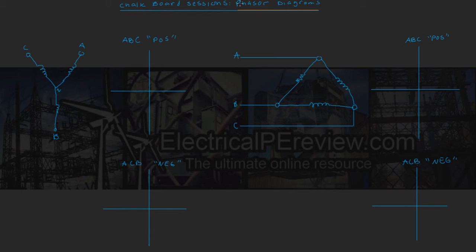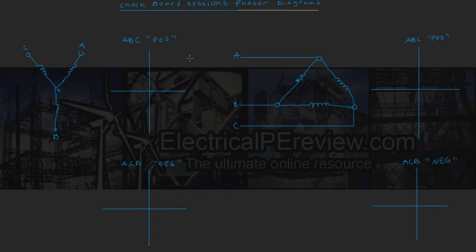So what exactly are phasor diagrams? We've got four empty phasor diagrams laid out here that we're about to populate. We've got a delta source and a Y source. A phasor diagram, in essence, is your polar graph of either currents, voltages, impedance, or power — just graphed in the polar domain. Usually when we talk about phasor diagrams, we're always going to be looking at either the current or the voltage.